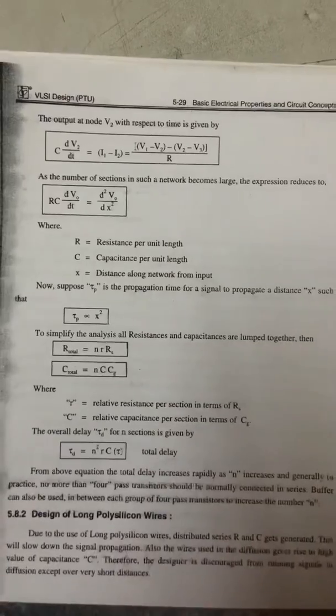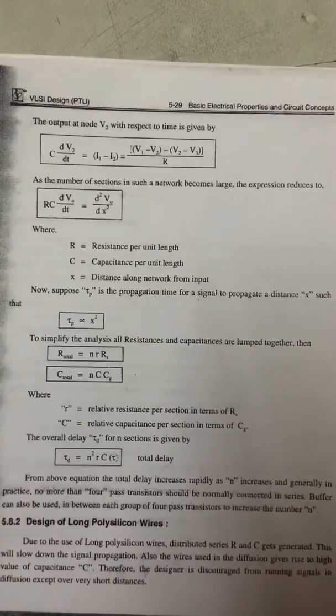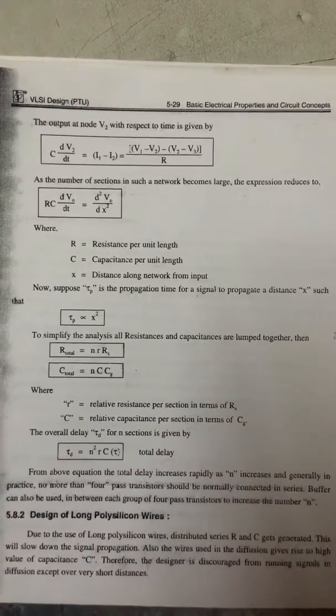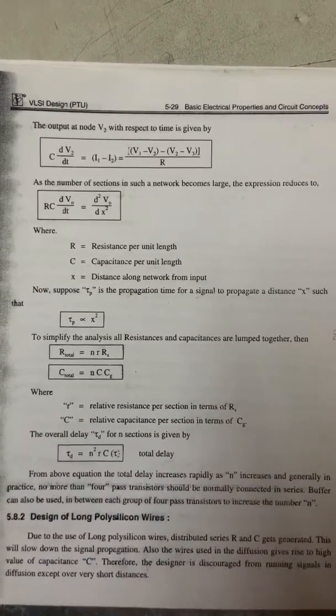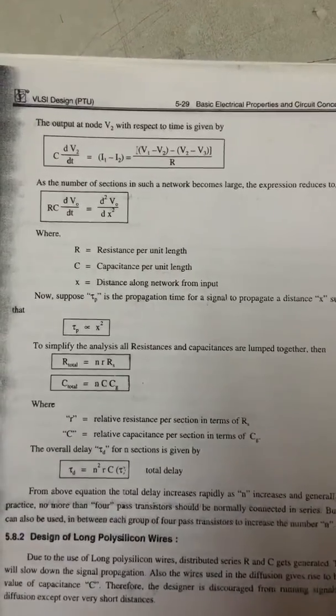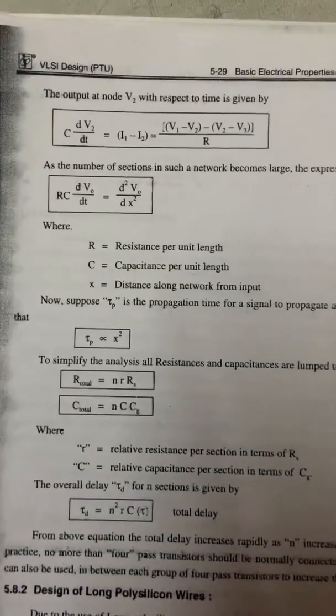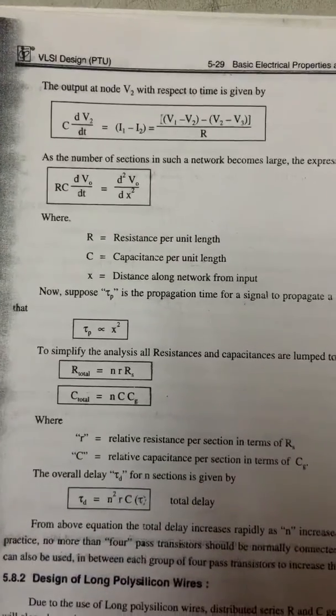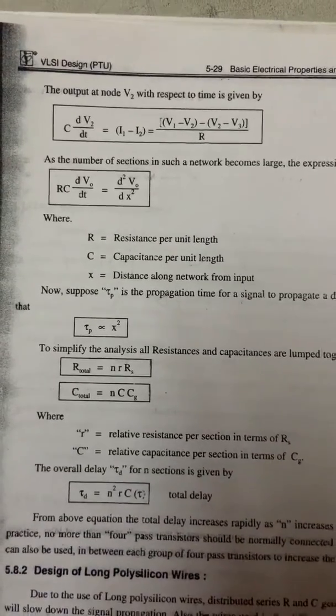Suppose τp is the propagation time for a signal to propagate a distance x, such that τp is directly proportional to x².